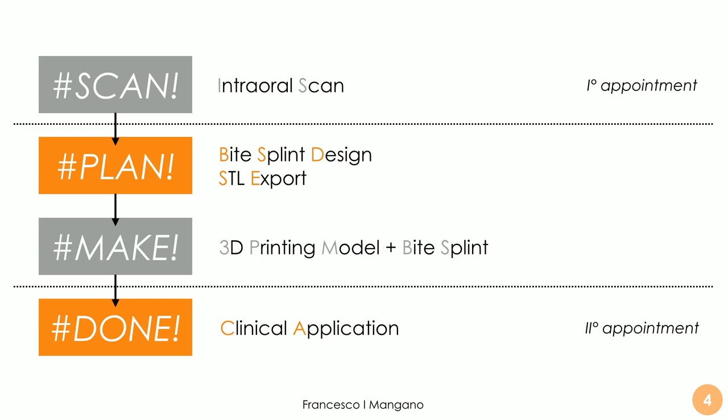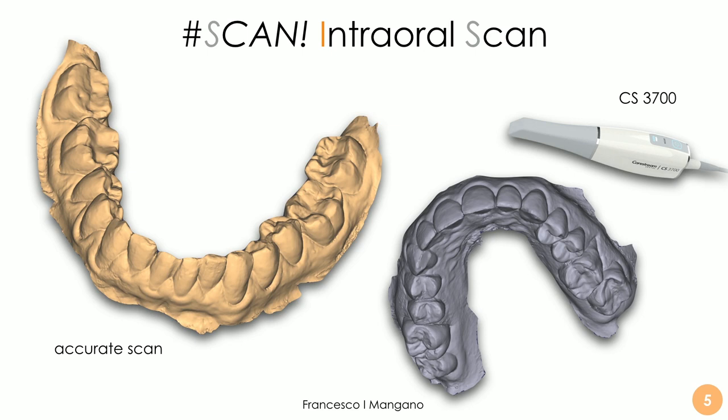The intraoral scan plus digital condylography data are all sent to the dental technician, who designs the bite splint. We then export the STL files to print the model and the bite splint, check the fit on the model, and apply the bite splint clinically at the second appointment. The first appointment can take 30 minutes to one hour if we also use the Mojo, but it provides individual information about the temporomandibular joints and mandibular movements.